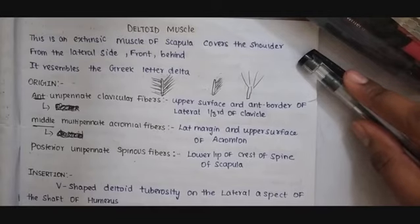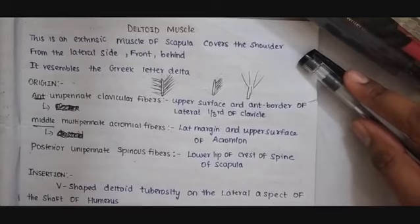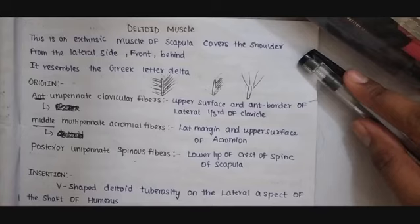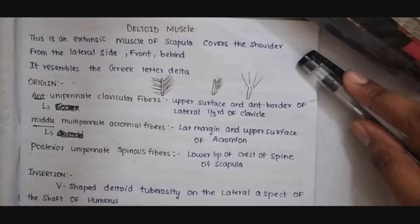The middle multipinnate acromial fiber. Scapula has three processes: namely acromion process, spinous process, and the coracoid process. This acromion process has two margins and two surfaces. The two margins are lateral margin and the medial margin. The two surfaces are superior surface and inferior surface. This middle multipinnate acromial fiber arises from the lateral margin and upper surface of the acromion process.